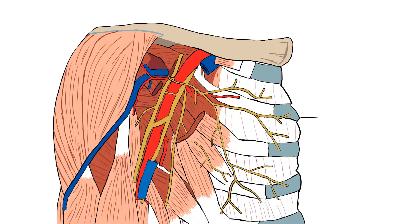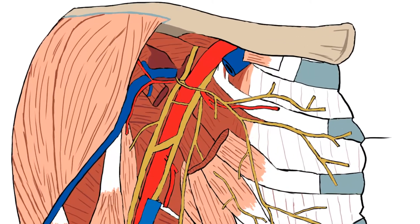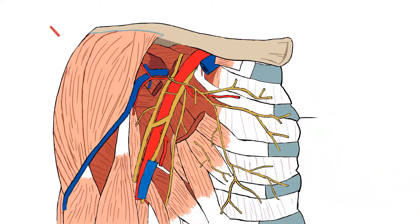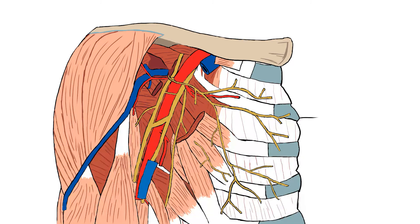Starting with the infraclavicular region, it is below the clavicle and above the third rib, between the deltoid muscle and the pectoralis major muscle. Here there is a fossa — the infraclavicular fossa. It is a triangular depression, also known as Morenheim's fossa.